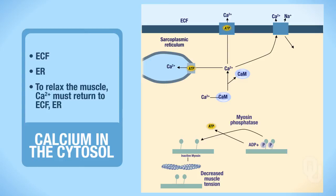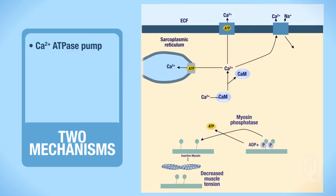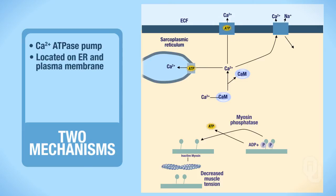But you also have to get calcium back across the plasma membrane and into the extracellular fluid. Here's the plasma membrane. There are two different mechanisms to get calcium back across this membrane. One is the calcium ATPase pump — the same pump that's on the ER — and in smooth muscle, it is also on the plasma membrane. The second type of transport on the plasma membrane is sodium-calcium countertransport.